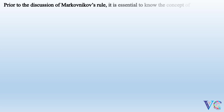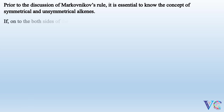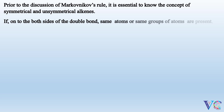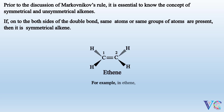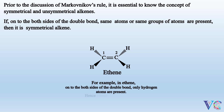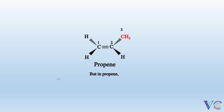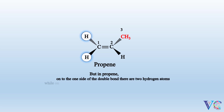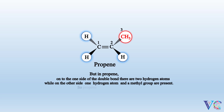Prior to the discussion of Markovnikov's rule, it is essential to know the concept of symmetrical and unsymmetrical alkenes. If on both sides of the double bond the same atoms or same groups of atoms are present, then it is a symmetrical alkene. For example, in ethene, only hydrogen atoms are present on both sides of the double bond — hence ethene is a symmetrical alkene. But in propene, one side of the double bond has two hydrogen atoms, while the other side has one hydrogen atom and a methyl group. So propene is an unsymmetrical alkene.